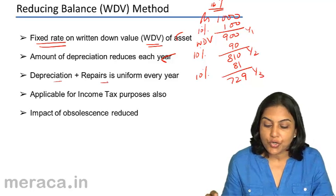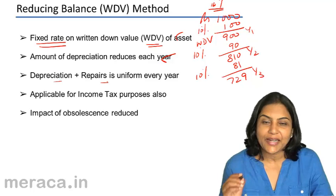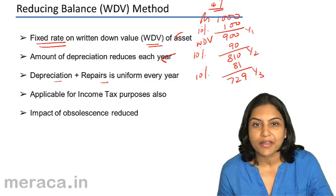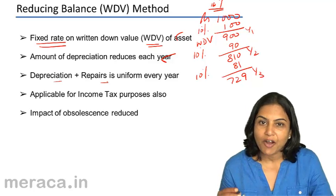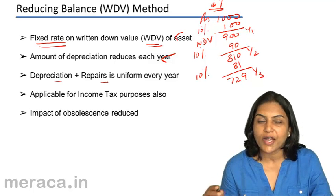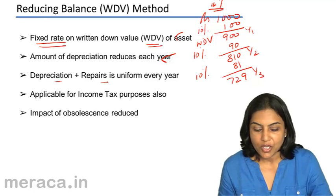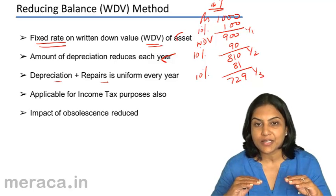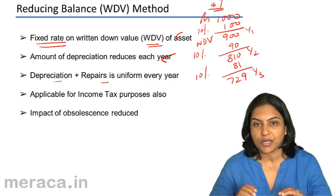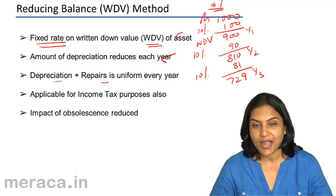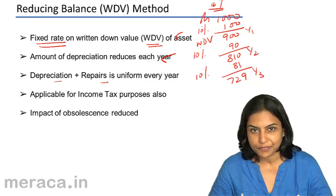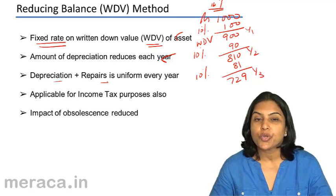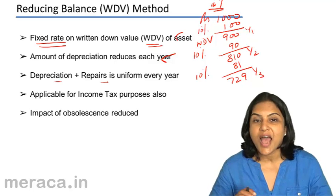One notable feature is that depreciation plus repairs is uniform every year. For example, in the first year of running a machinery, there may be hardly any repair costs. However, after 2 or 3 years, the amount of repairs required may go on increasing. Under the reducing balance method, depreciation reduces while repairs and maintenance costs go up. Therefore, in total, the cost of running the asset remains more or less uniform. That is why the written down value method is quite popular with items of machinery which usually have large repair expenses as the machine gets older.